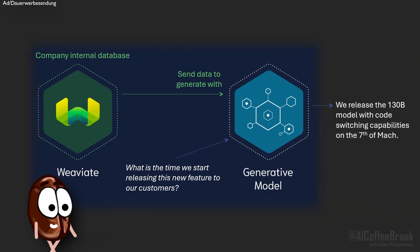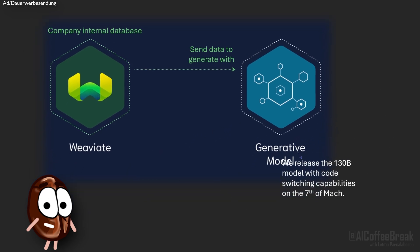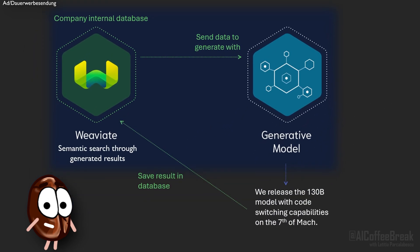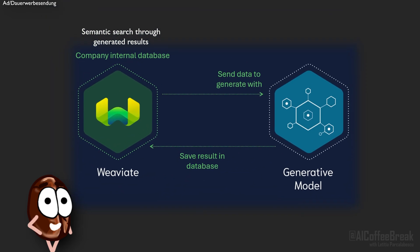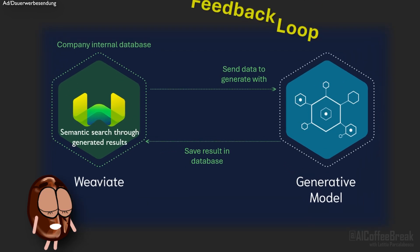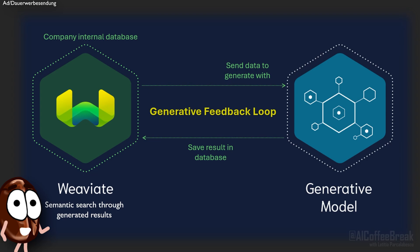Now let's get to the best part and discuss generative feedback loops. As mentioned earlier, it is common practice to fetch additional information from a vector database to support large language models with factual knowledge. Now if you want to use the LLM outputs for a future application, we need to store the outputs again and make them searchable and fast to retrieve. This is what we call generative feedback loops: they store the generated outputs back into the database with the vector embedding, making the generated data searchable in near real time if you use a fast vector search engine such as Weaviate.